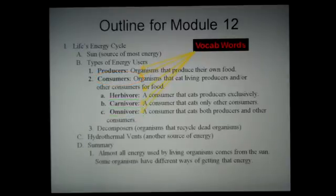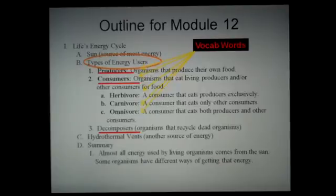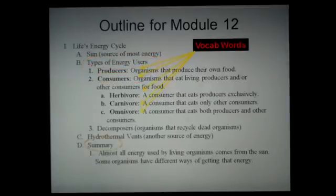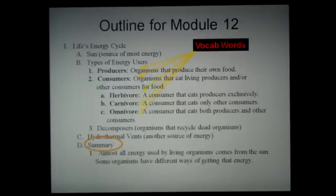In the same way, producers, consumers, and decomposers are three examples of types of energy users, and therefore they are listed under the letter B as 1, 2, and 3. So that's what I mean by making lists and putting them in the proper place. Every section needs to have a summary where you take one or two sentences to summarize what that section was about and how it relates to the section heading. Make sure you include all the bold words and put them where they belong in their lists, indented properly.